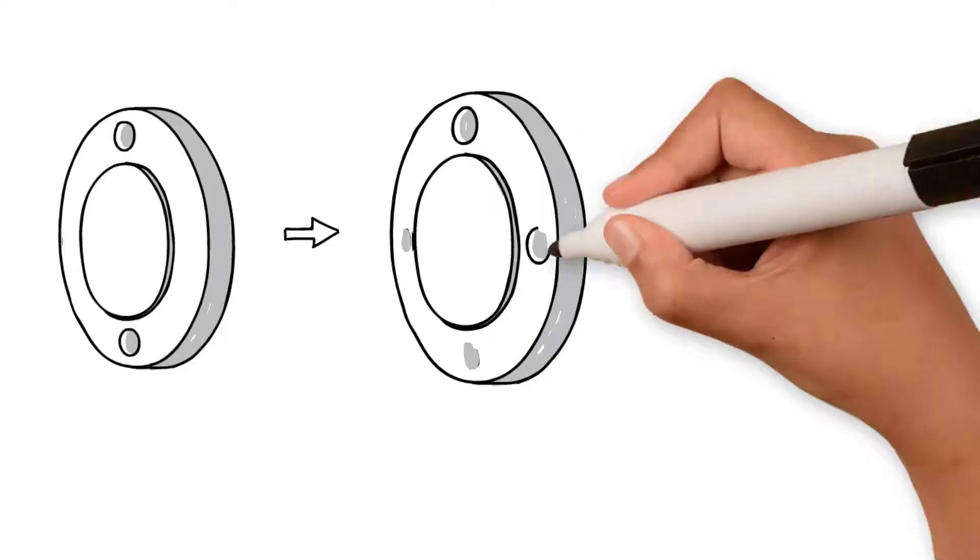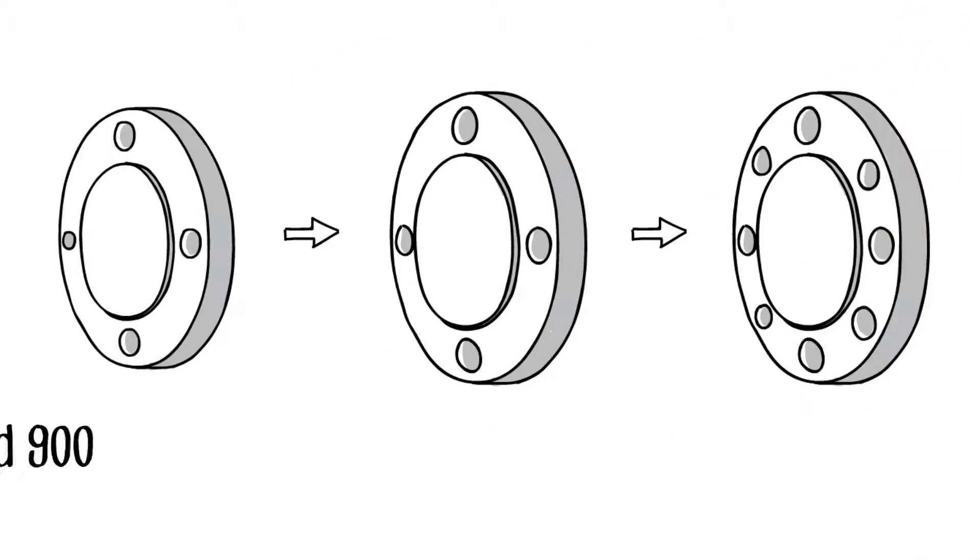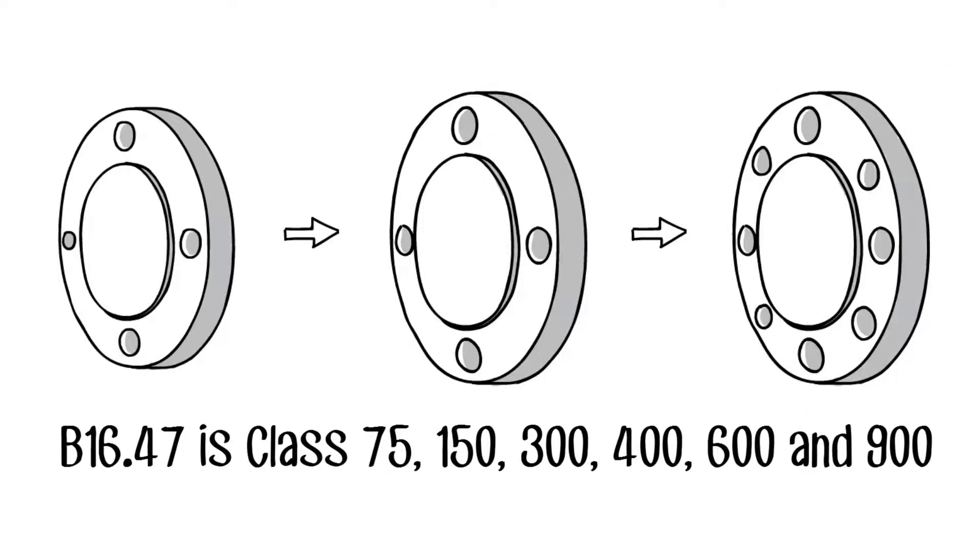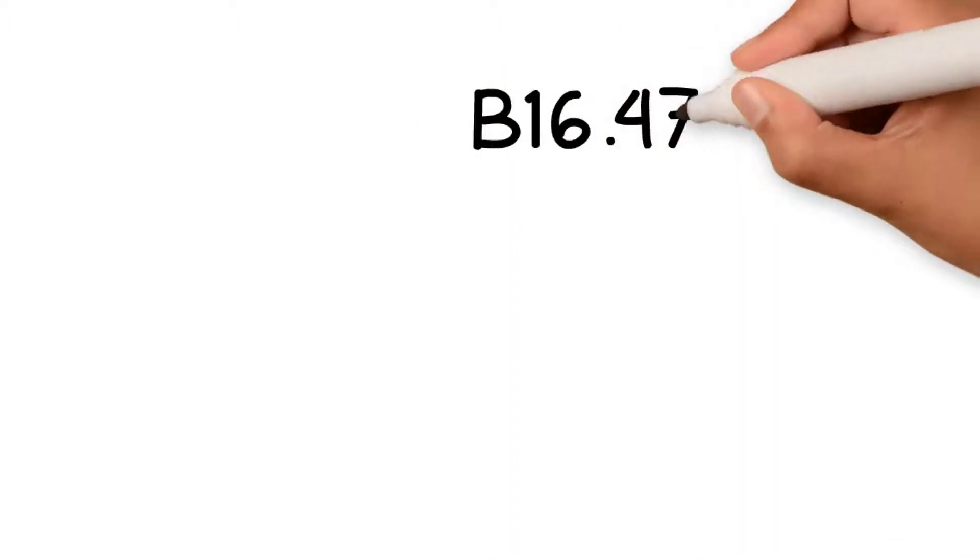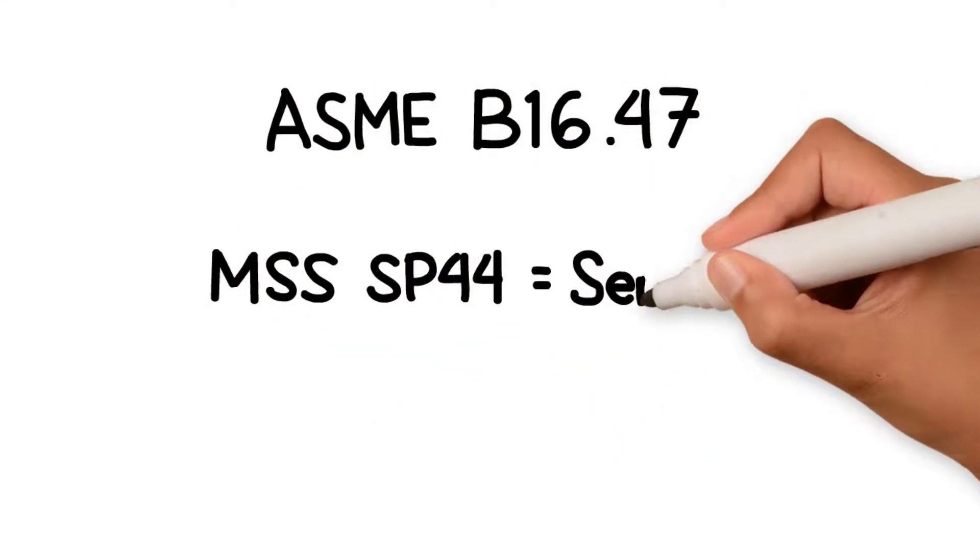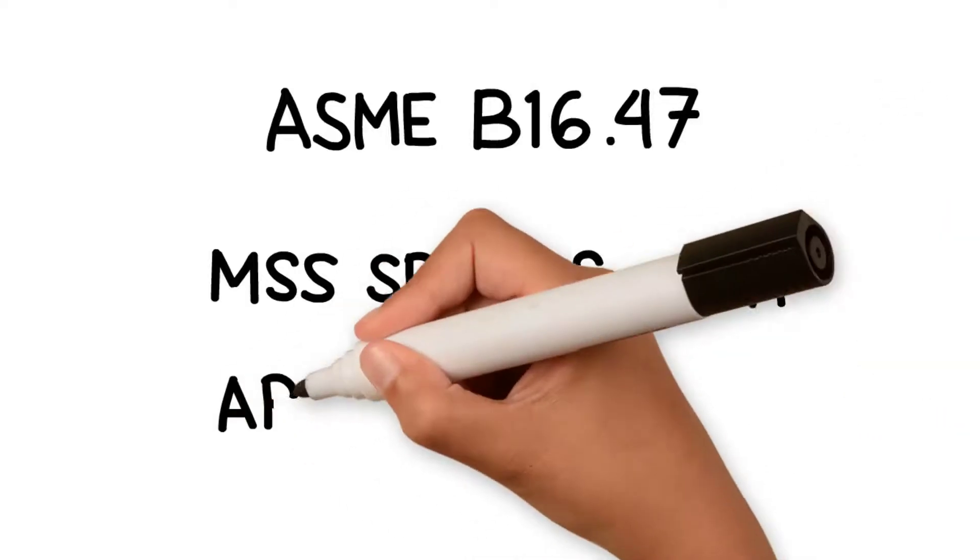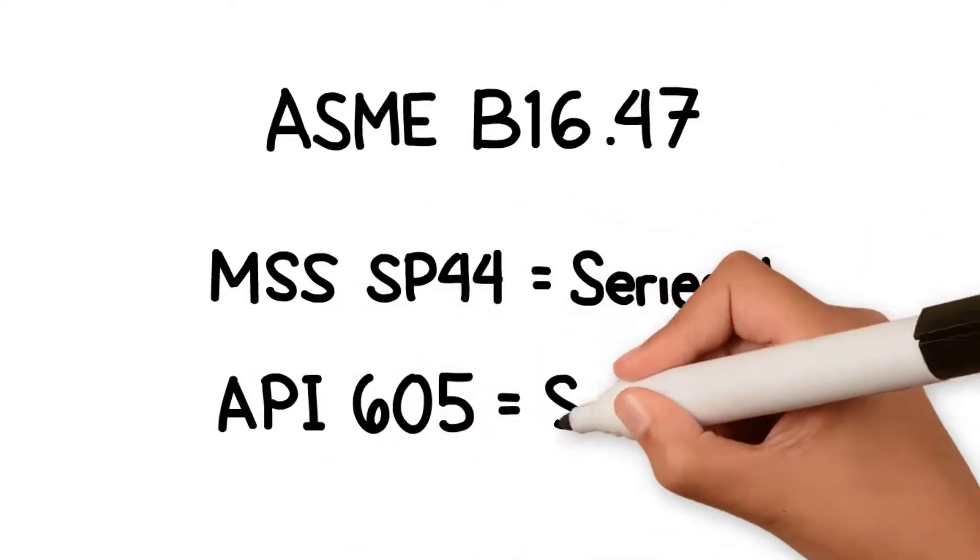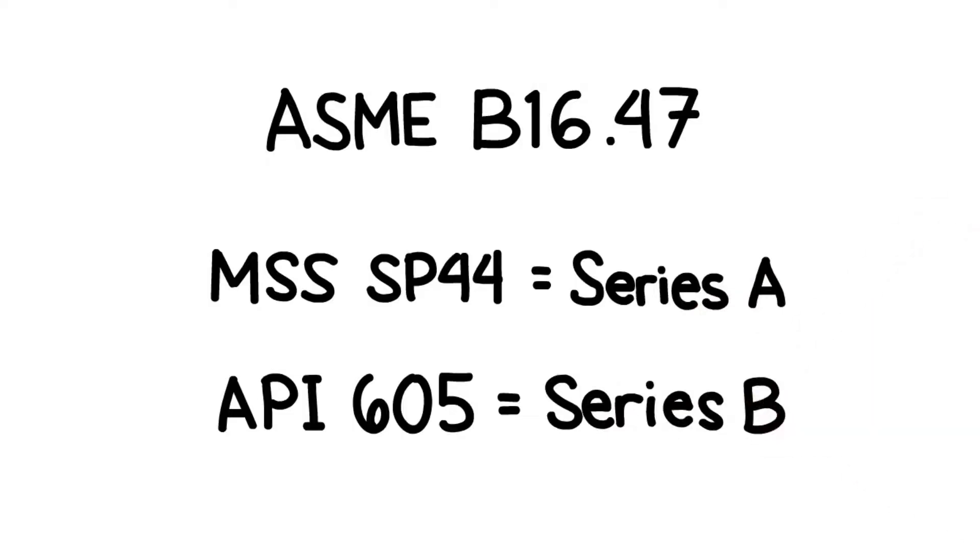Pressure classes covered by B16.47 are Class 75, 150, 300, 400, 600, and 900. The B16.47 standard incorporates MSS SP44 and API 605. Hence, MSS SP44 flanges are equivalent to Series A flange, whereas API 605 flanges are equivalent to Series B flange.